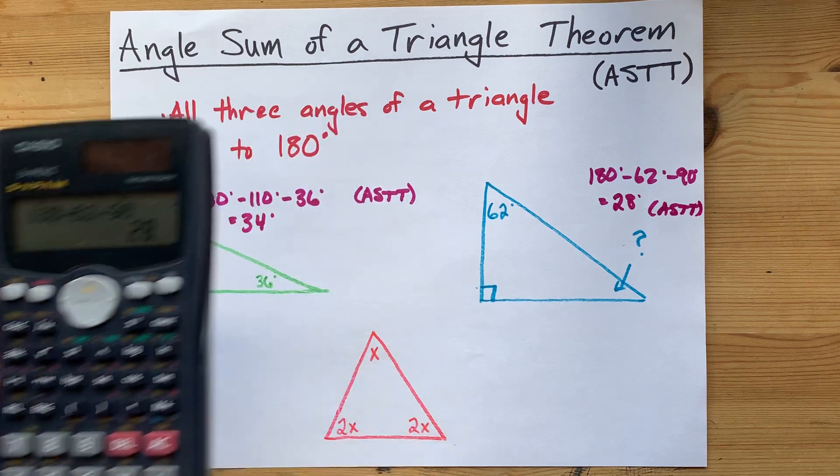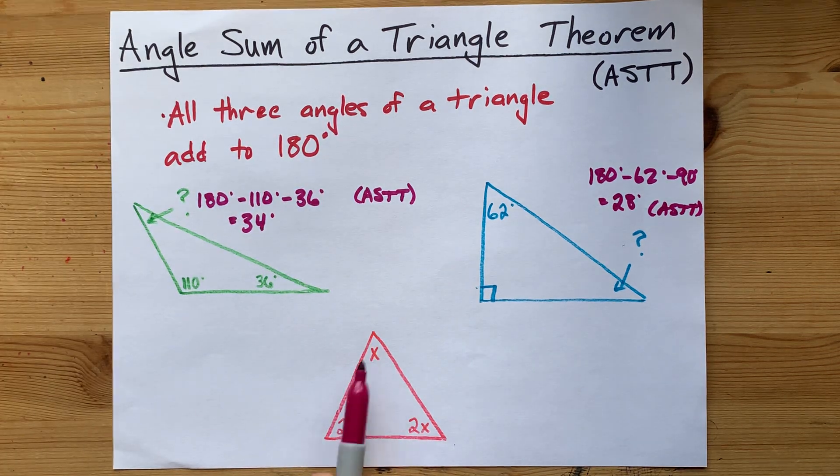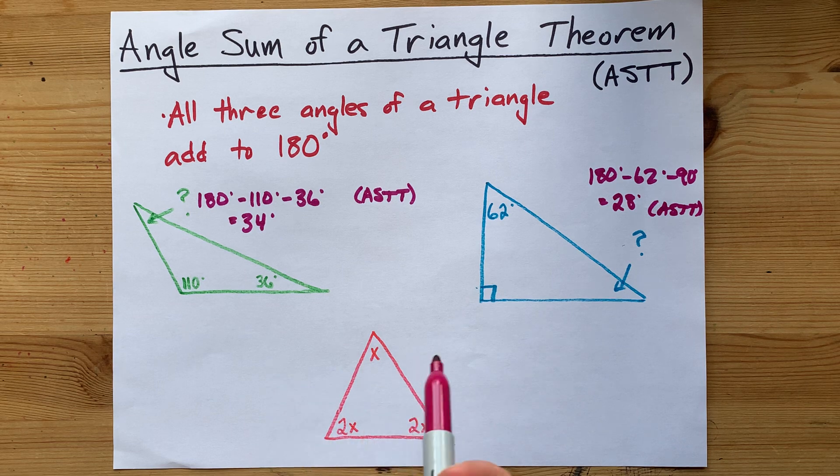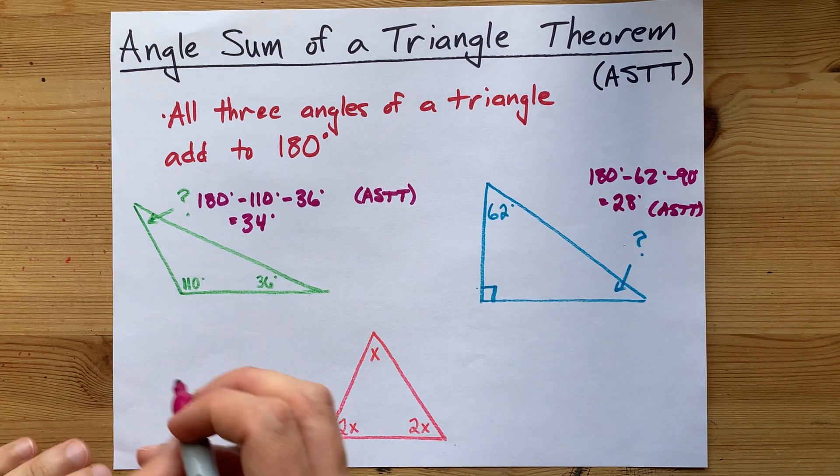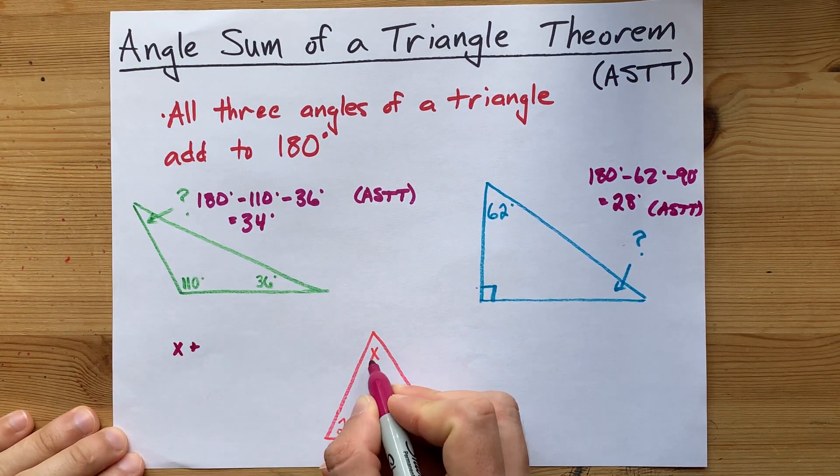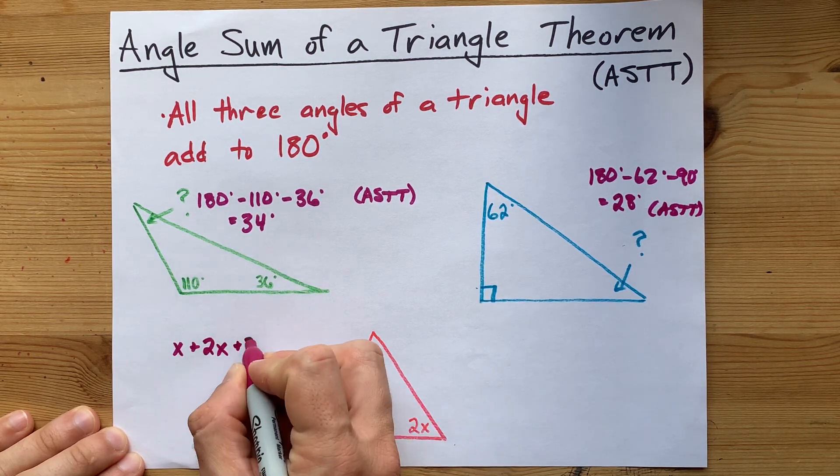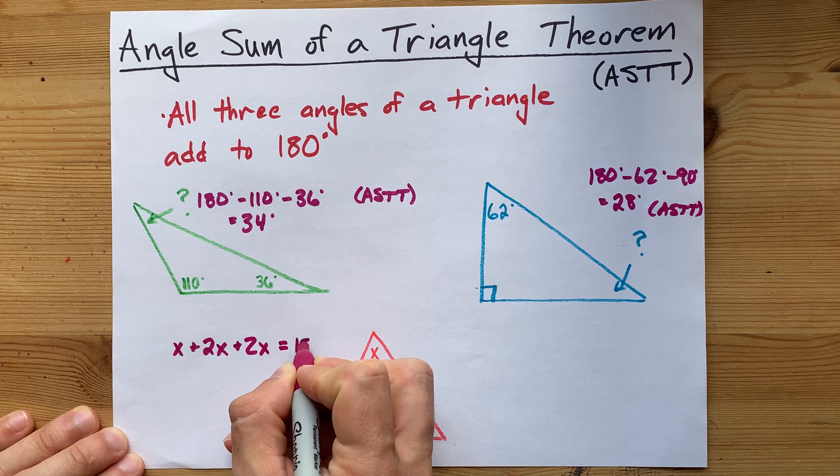And lastly, if you're given the angles of a triangle and some of them have a variable in it, like x, you can say that the one angle plus the other angle plus the other angle all equal 180.